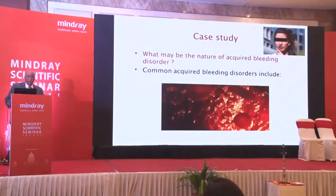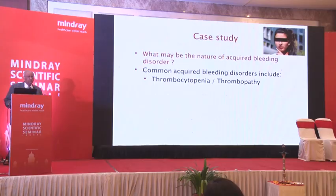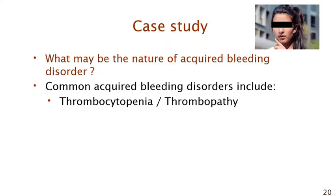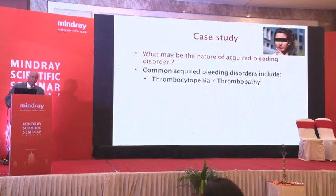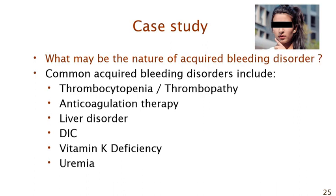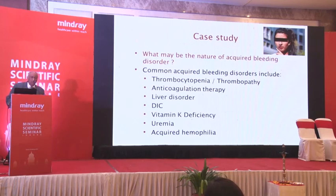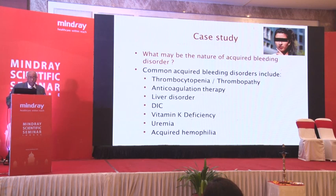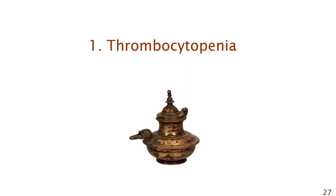The third question is: what is the nature of the acquired bleeding disorder? The common acquired bleeding disorders are: thrombocytopenia (and thrombopathy), anticoagulation, liver disease, DIC, vitamin K deficiency, renal failure, and acquired hemophilia — where, like ITP, there is not an antibody against platelets, but an antibody against a clotting factor such as factor VIII. So Sapna could have any of these.